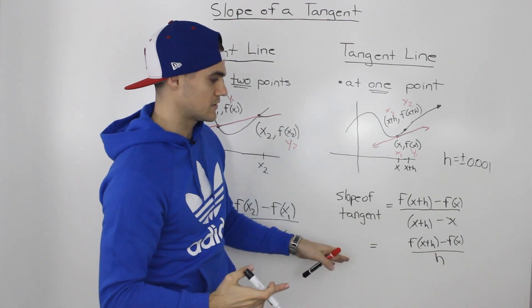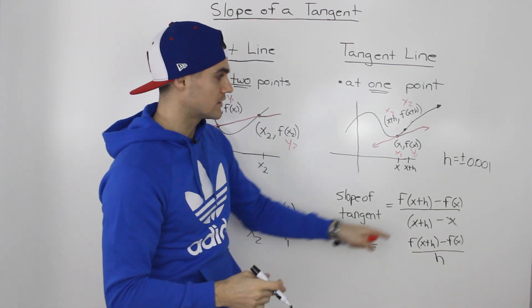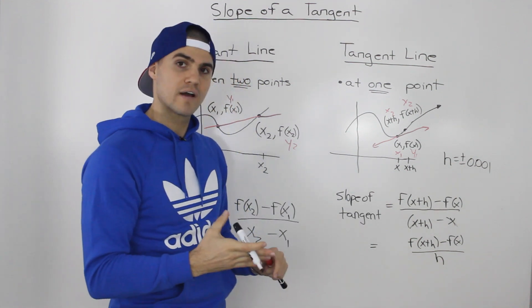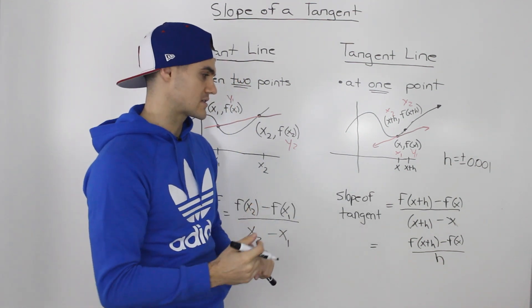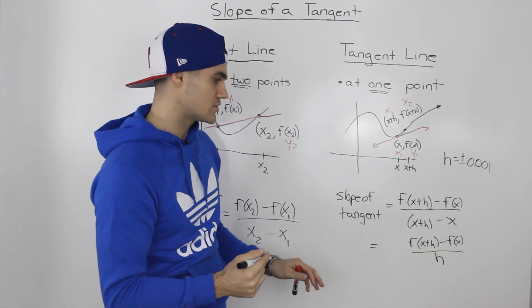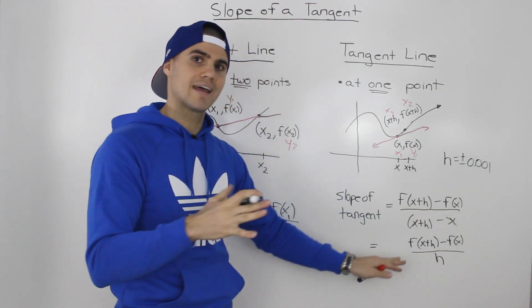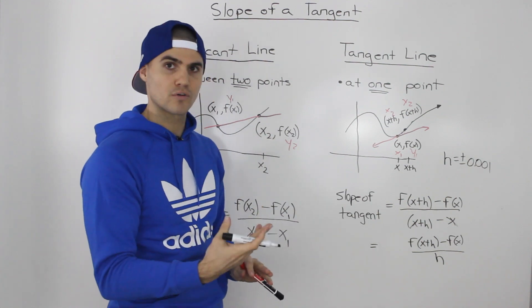And then we can calculate the slope of the tangent. However, in calculus we're not going to be approximating anymore. We're going to be finding the exact value for that slope of the tangent. So what we're going to do is algebraically we're going to use this formula, but then at the end we're going to sub in zero for h.